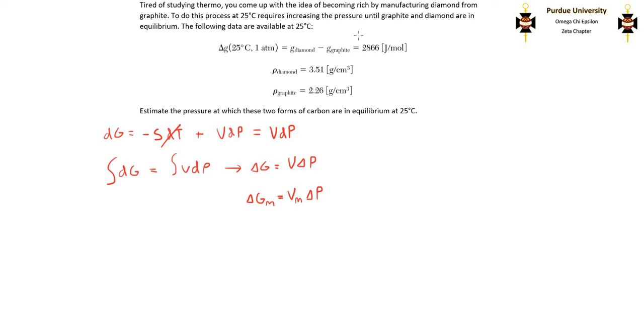Like I said before, this 2866 joules per mole is the Gibbs free energy change associated with the process of graphite changing into diamond at 25 degrees Celsius and 1 atm. And G_diamond minus G_graphite equals zero is the equilibrium condition.